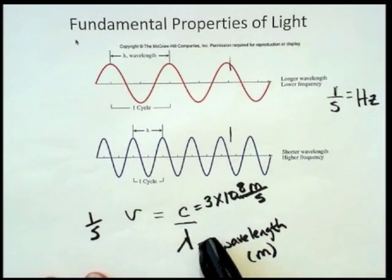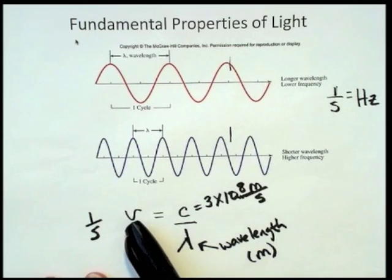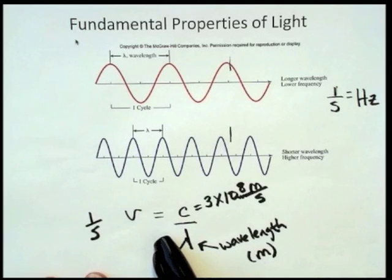So given some wavelength in meters, you can calculate the frequency, or given the frequency in units of hertz, 1 over seconds, or per seconds, you can, knowing the speed of light, you can calculate the wavelength.